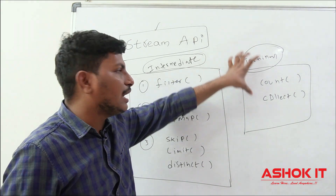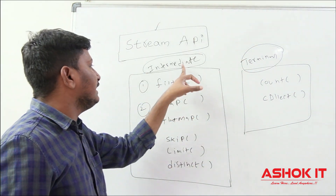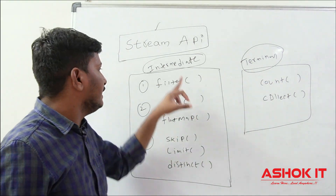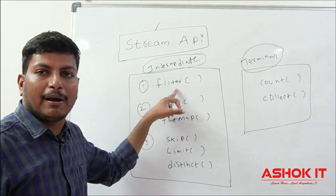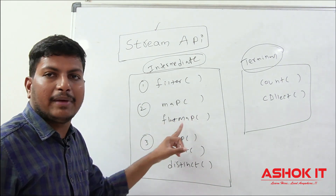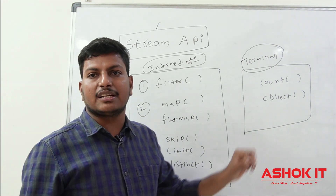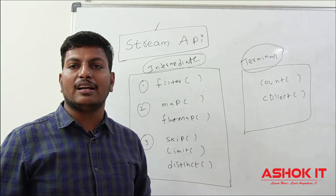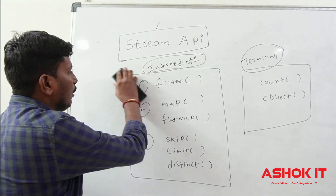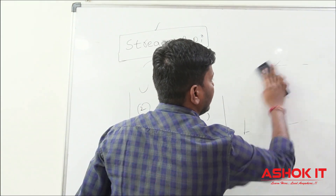So Stream API methods are divided into two types: intermediate operational methods and terminal operational methods. Intermediate operational methods perform the operation and return a new stream as output. Terminal operational methods perform the operation and return a result — not a new stream. Now let's see how to perform a filter operation using a stream.